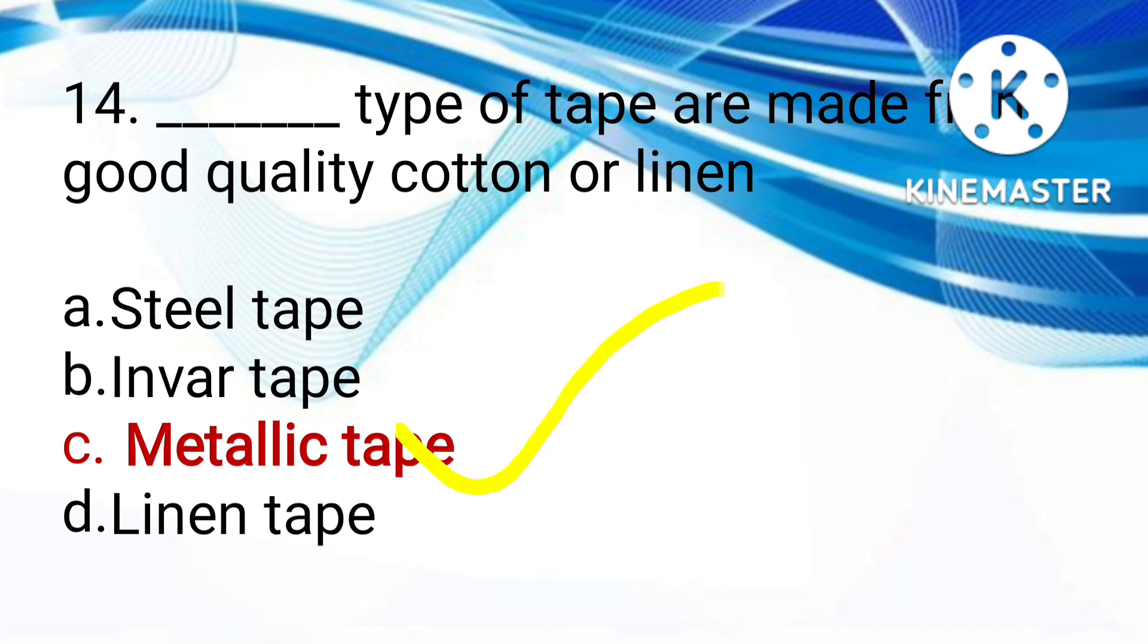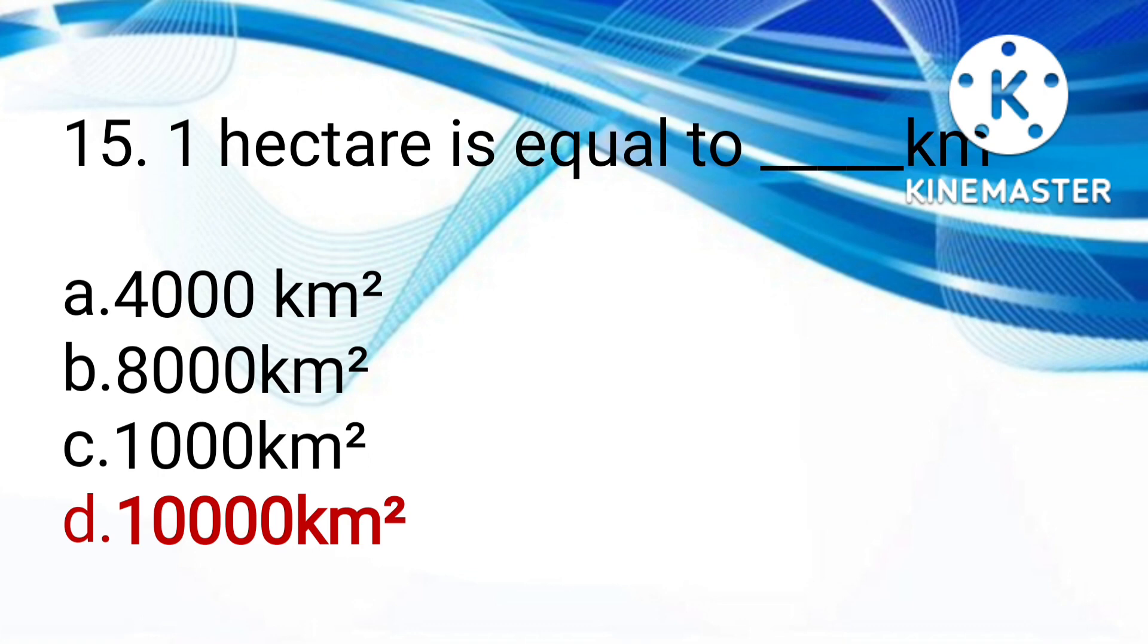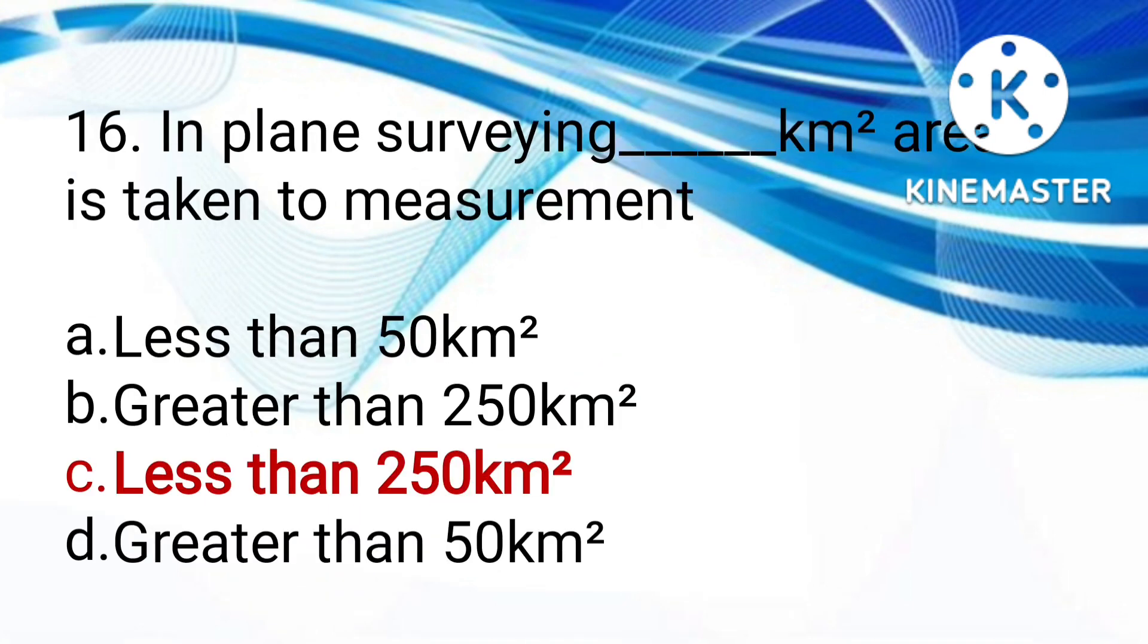One hectare equals how many square meters? 4,000, 8,000, 10,000, or 1,000. The answer is 10,000. In plane surveying, less than 50, more than 250, less than 250, or more than 50 square kilometers area is taken for measurement. The answer is less than 250 square kilometers is considered for plane surveying.